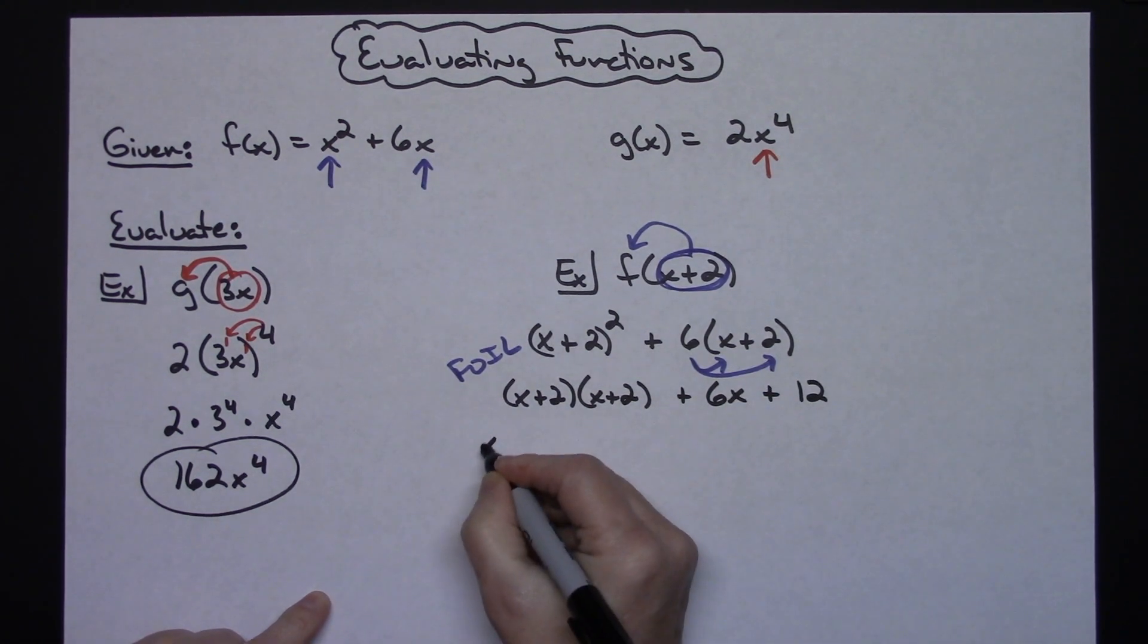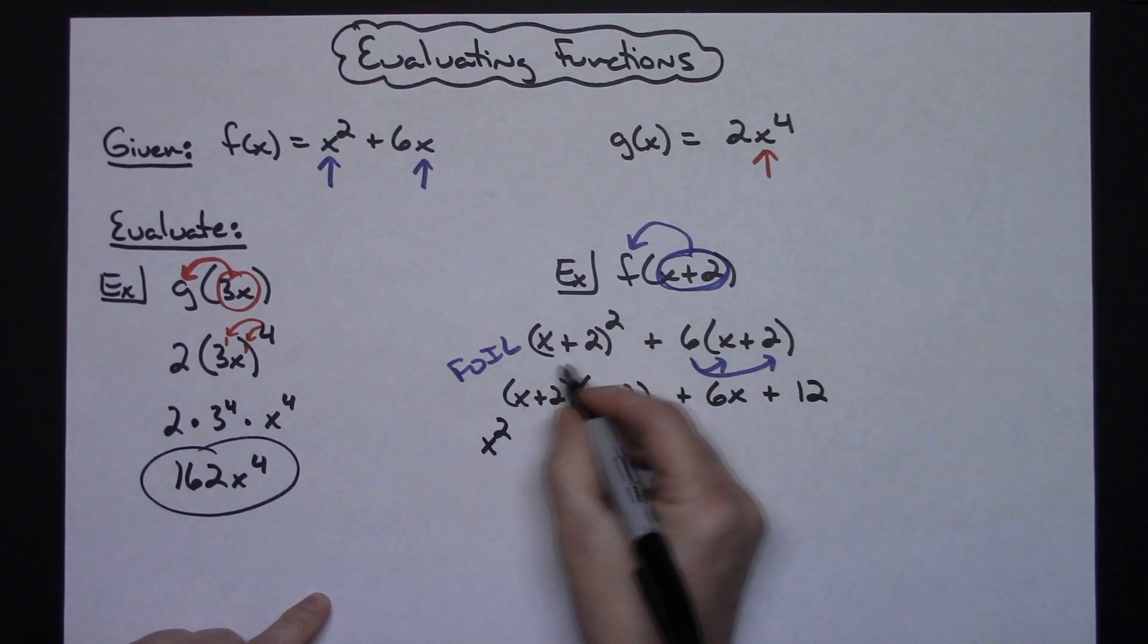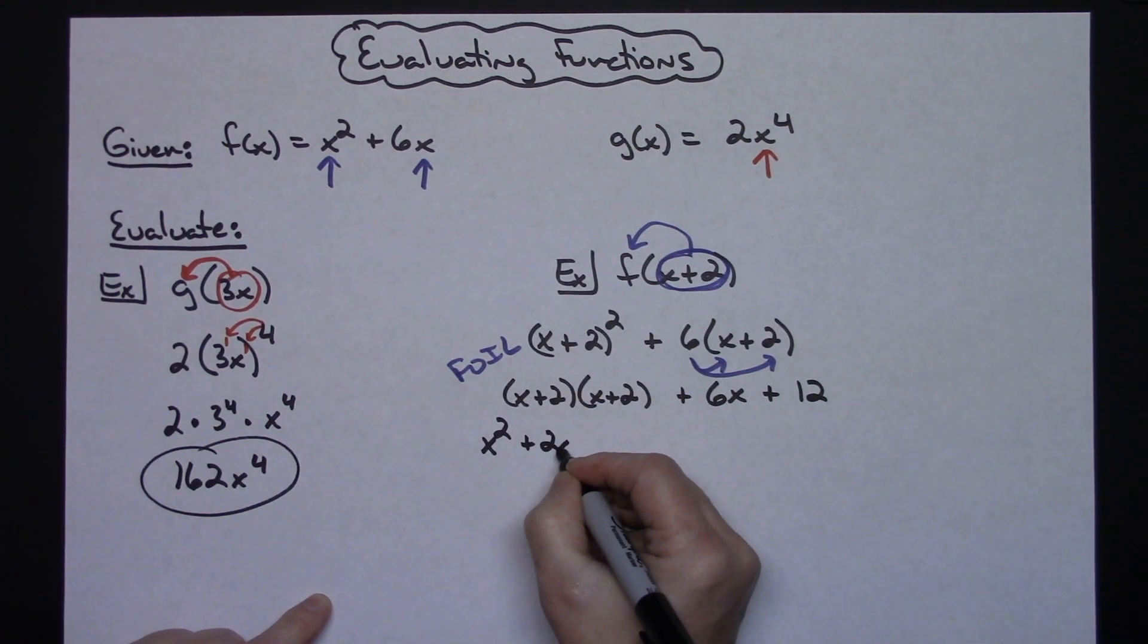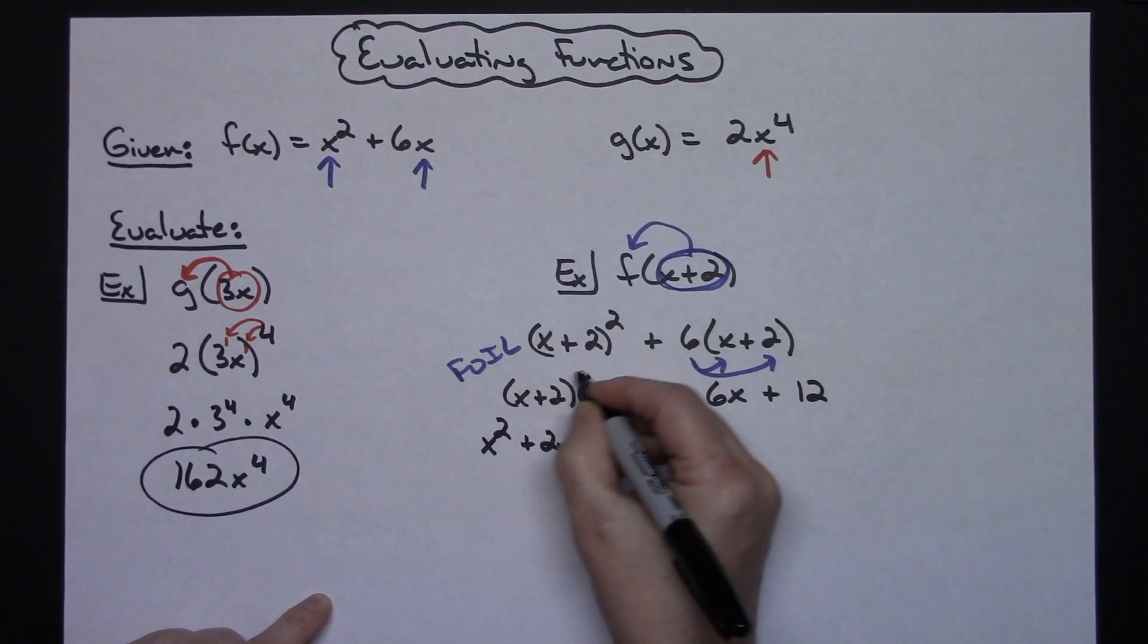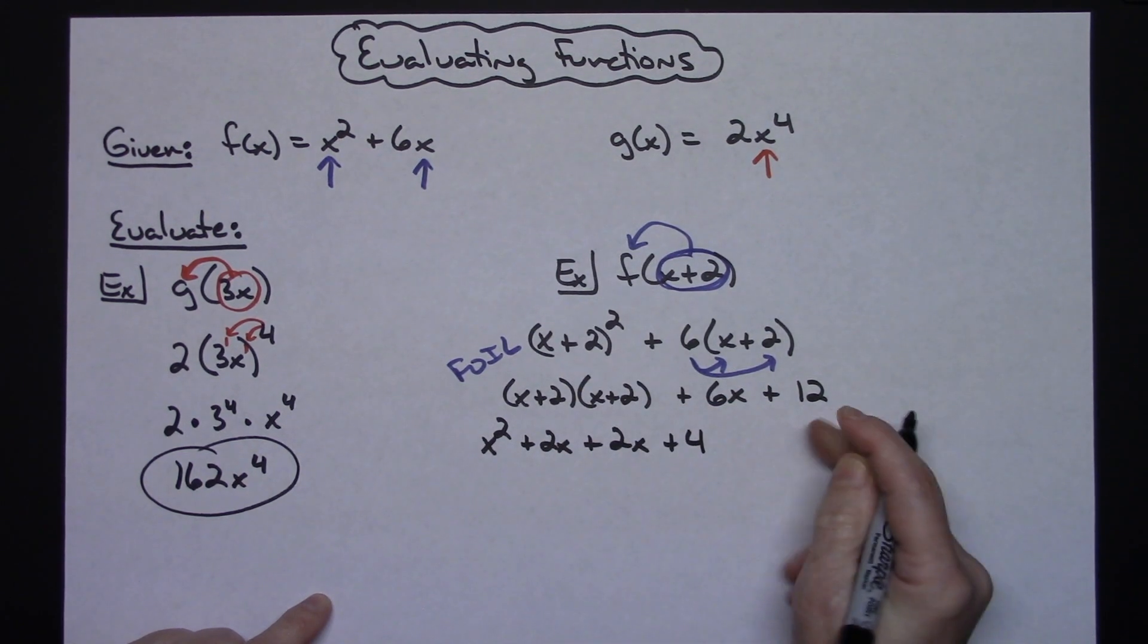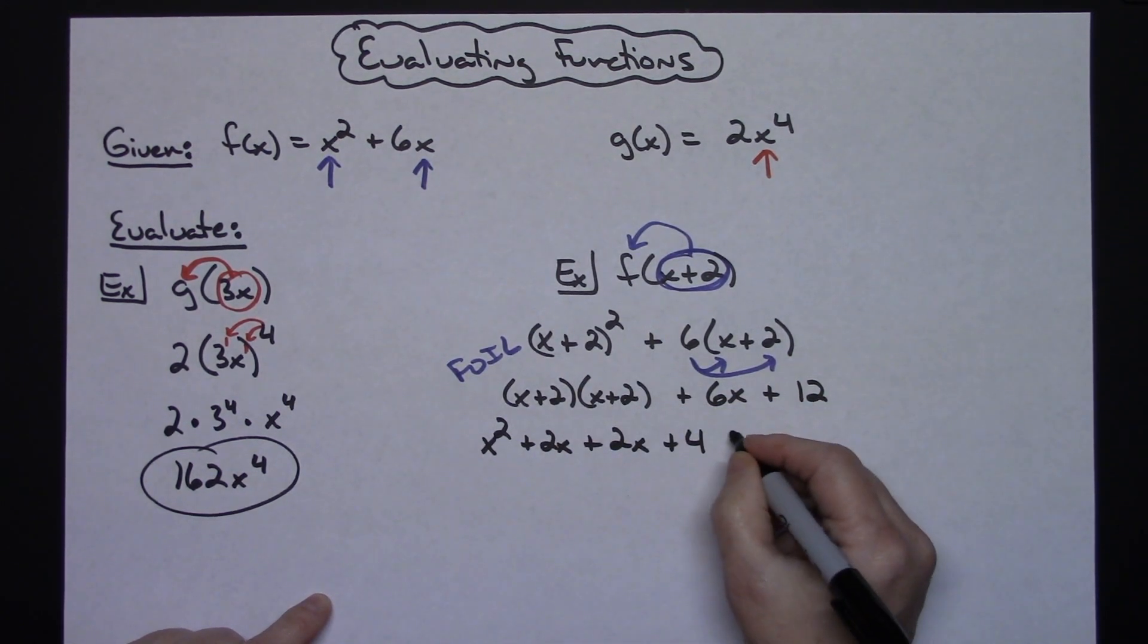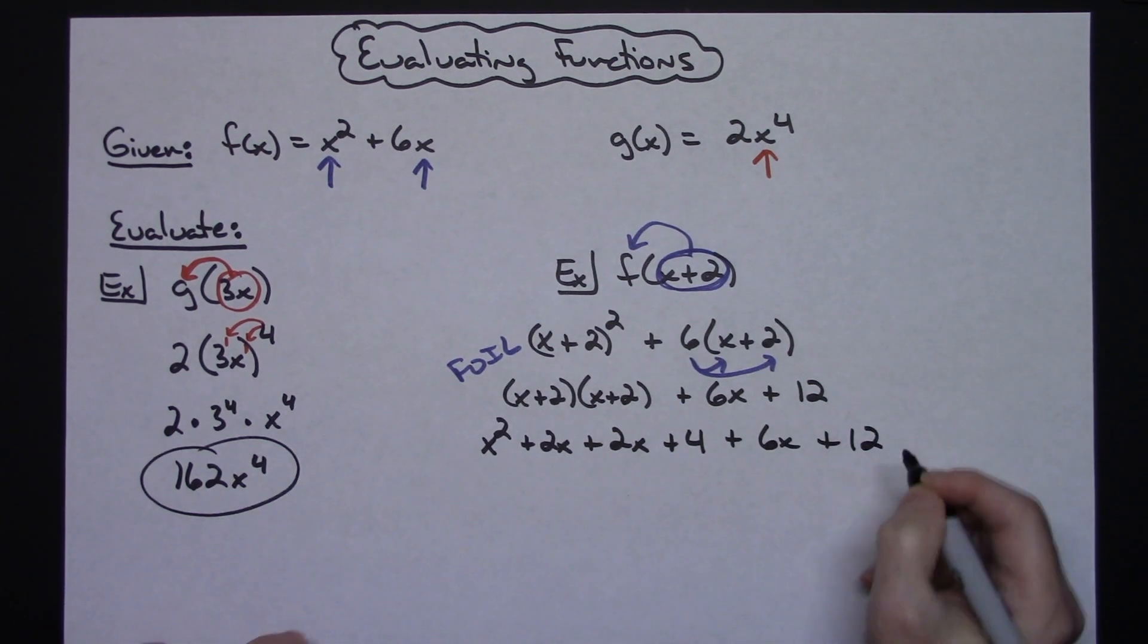Implementing that FOIL, I will have x squared. Outside terms is plus 2x. Inside terms plus 2x. Last terms plus 4. This will come straight down: plus 6x and plus 12.